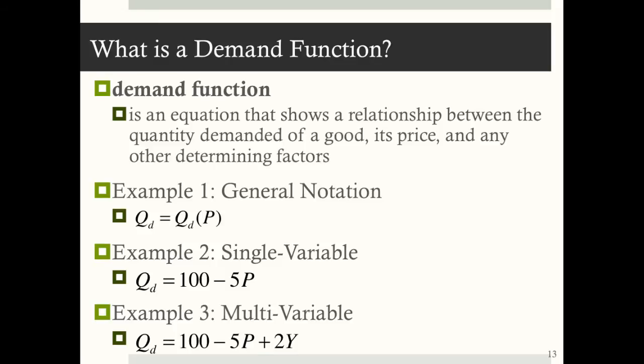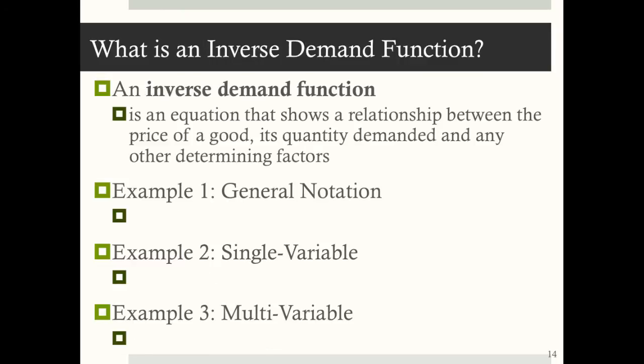You'll often be asked to find the inverse demand function. The inverse demand function is an equation that shows a relationship between the price of a good, its quantity demanded, and any other determining factors. All an inverse demand function is, is a demand relationship with price on the left-hand side of the equal sign and everything else on the other side. For example, in general notation Q sub D depended on P; rearranging gives P depends on Q sub D.